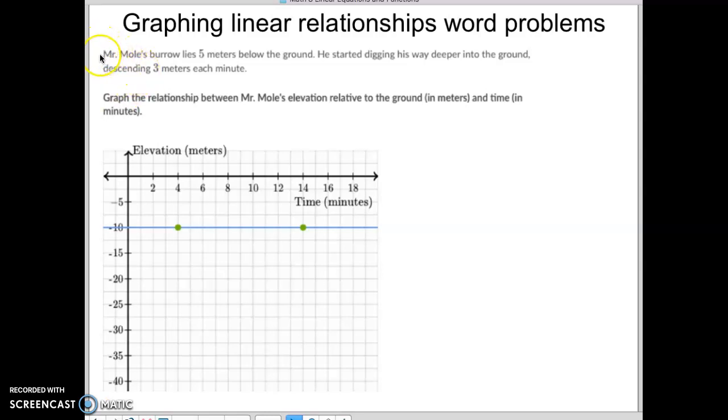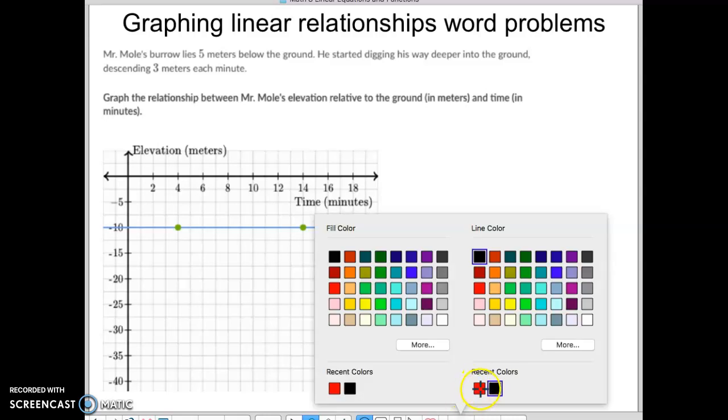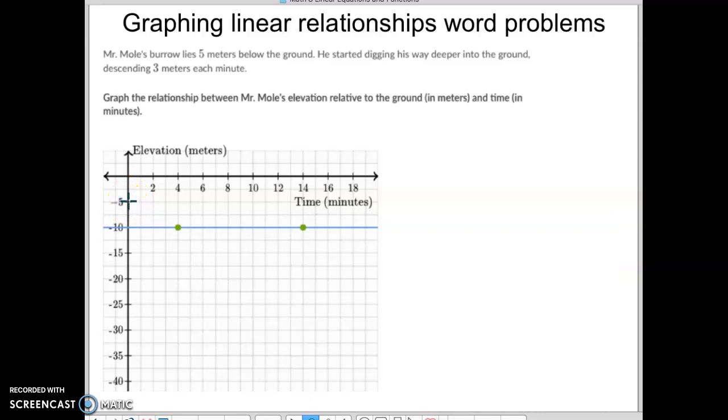So on this one, you're going to notice right up here, Mr. Mole's burrow lies five meters below the ground. He then started digging deeper into the ground, descending at a rate of three meters per minute. So first of all, we're going to start with a dot, and I'm going to see if I can pull a dot up here. I'll put a nice little red color to it. We are going to start with a dot right here at negative five. So Mr. Burlow started at negative five, so five meters below ground. This is your starting point on the y-axis.